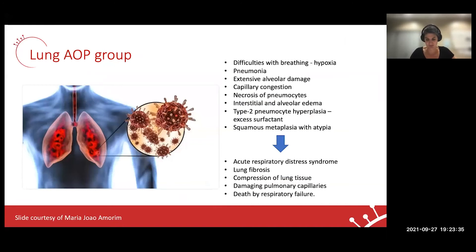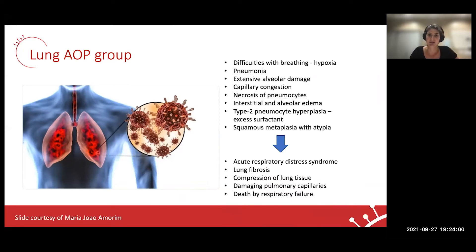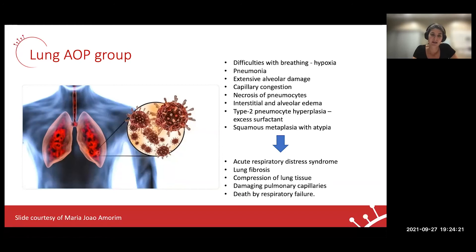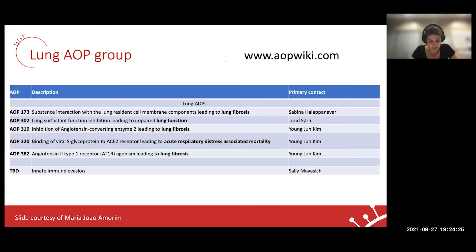The lung and hub groups joined forces to set the lung as the initial framework for everybody to use, providing a basis for COVID-19 related AOPs. The goal is to explain how viral infection leads to difficulty breathing, hypoxia, pneumonia, extensive alveolar damage, capillary congestion, necrosis of pneumocytes, interstitial and alveolar oedema, type 2 pneumocyte hyperplasia, and excess surfactant — leading to adverse outcomes such as acute respiratory distress syndrome, lung fibrosis, compression of lung tissue, damaging pulmonary capillaries, and death by respiratory failure. AOPs have already been developed and entered into the wiki.